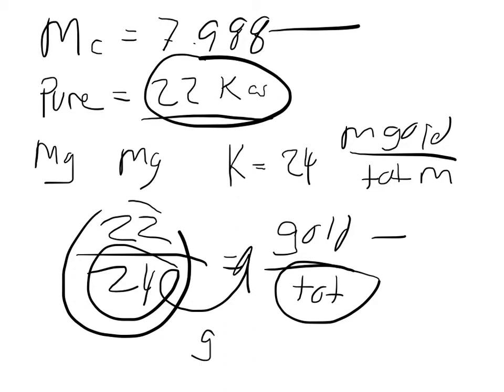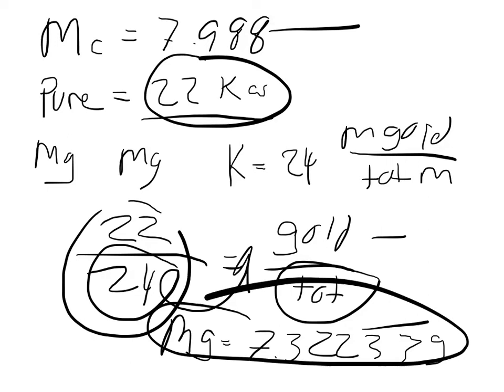And it should give us the mass of gold. And that mass, so the mass of gold is equal to 7.32233, and that's grams. So we actually want this in kilograms. So we can say that the mass of gold is 0.0073223, and that's kilograms.